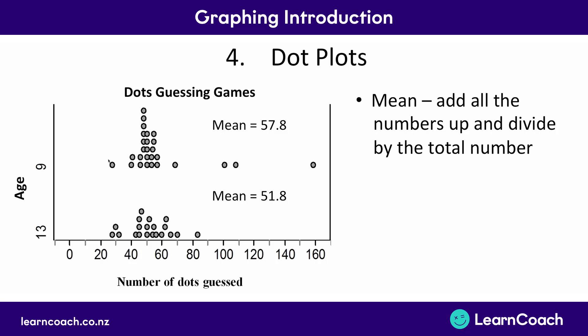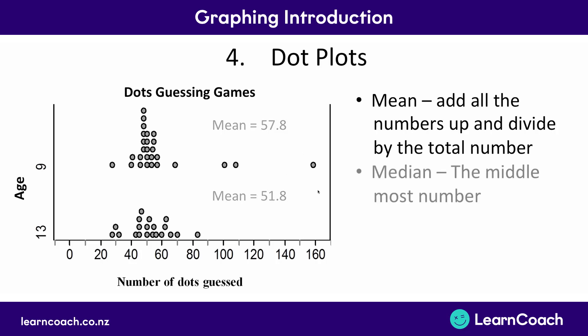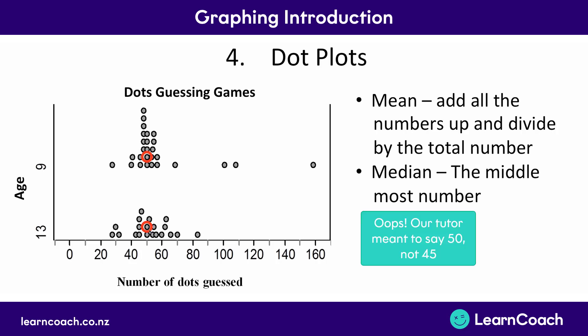If we include all numbers for 9-year-olds, this mean is influenced by big guesses like 160 and two guesses over 100. So the mean is affected by these outliers, which makes it the second-best measure of average. The best way to measure average is the median — just the middle number in each set. The middle number for age 9 is 45, and the middle number for age 13 is also 45. The median is often a much better measure of average because it doesn't get affected by outliers.